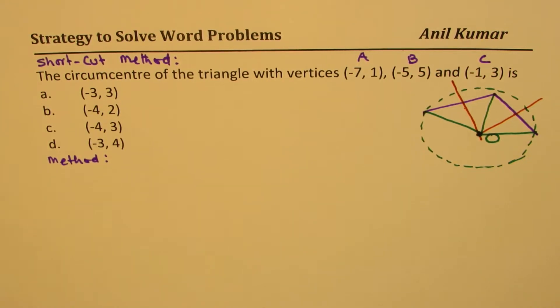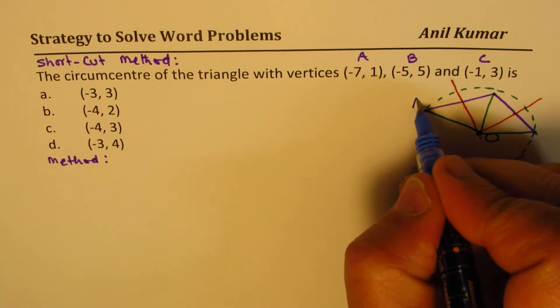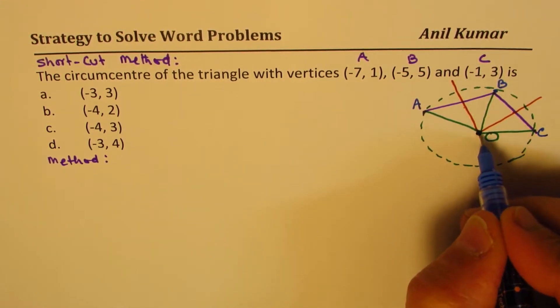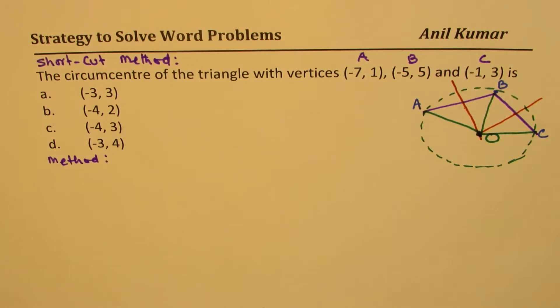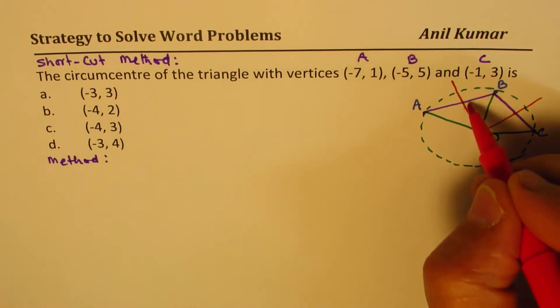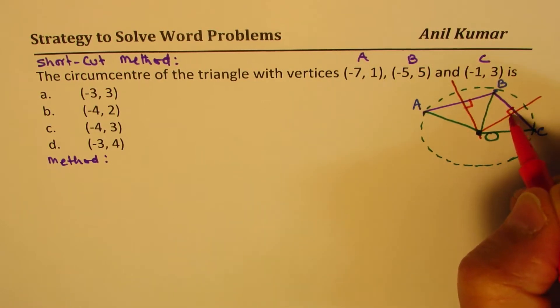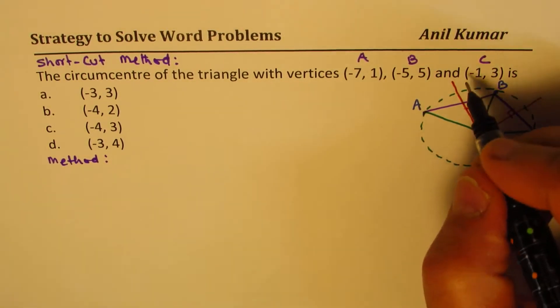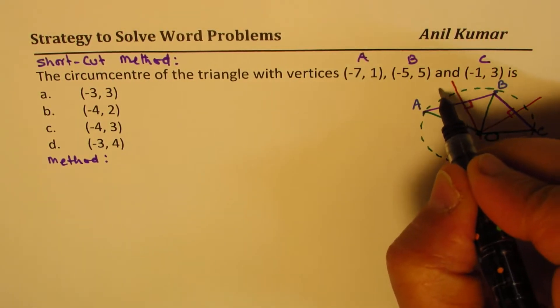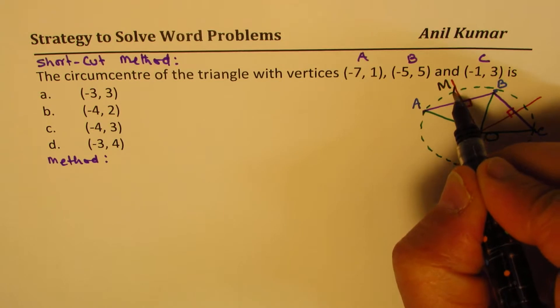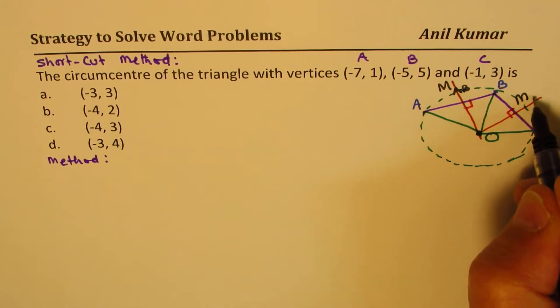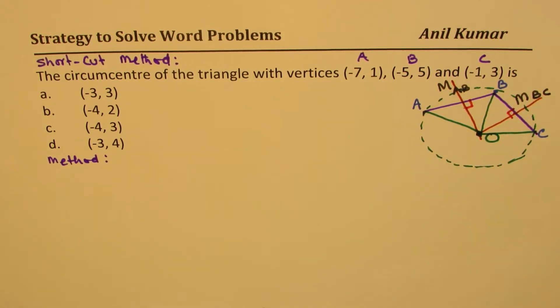Now, let's begin to solve this particular question. The points here are a, b, and c. We are interested in finding the circumcenter O. So first step will be to find the midpoints of each segment. Let me call these midpoints as, let's say this midpoint as M capital of AB, and we'll call this as M capital of BC.